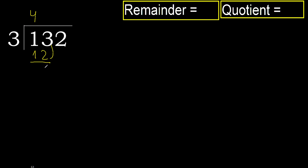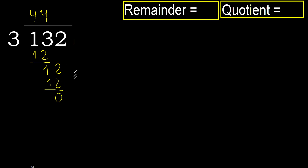Subtract. Next. 12. 3 multiplied by 4 is 12, which is not greater. Subtract 0. Next.